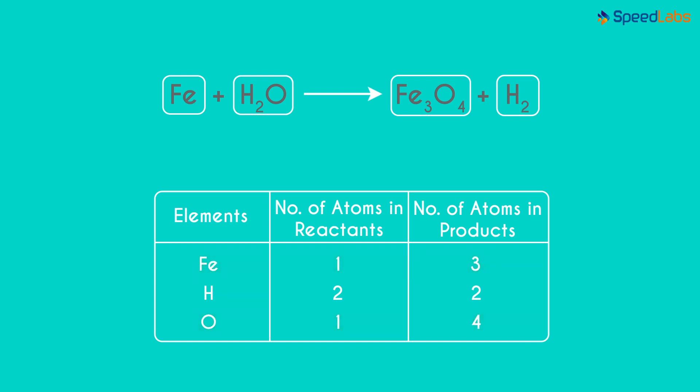Look for the atom which is maximum in number on any side. If we look at this table, the maximum number is 4 and it's on the right. Oxygen in this compound has 4 atoms. So our first aim will be to balance the oxygen atoms.